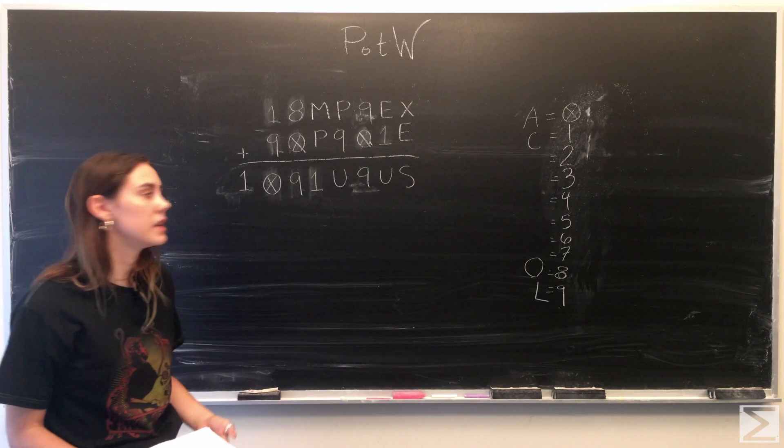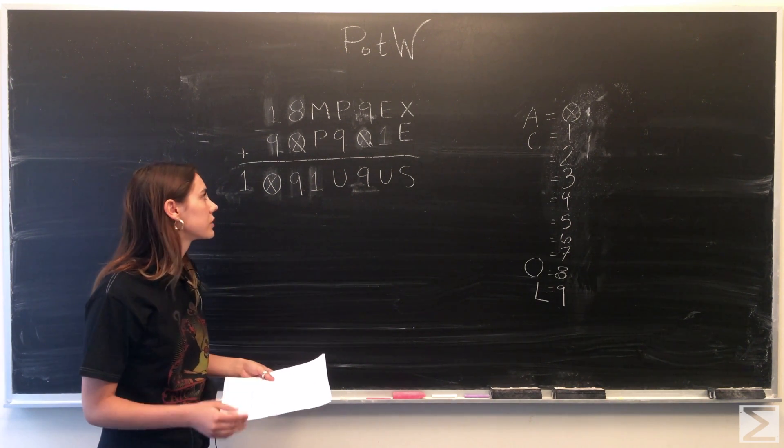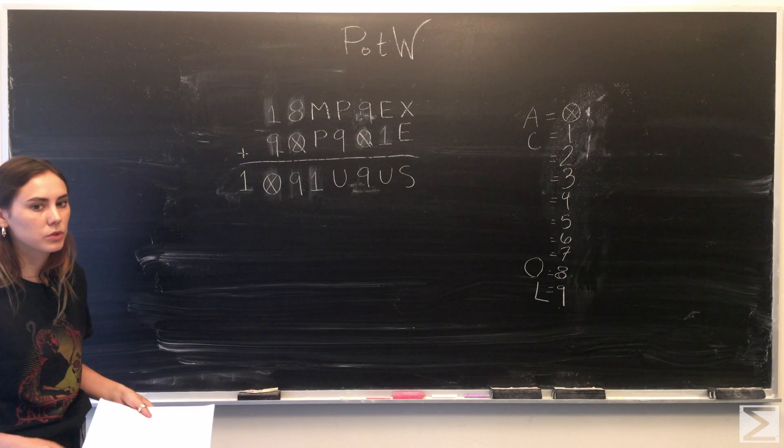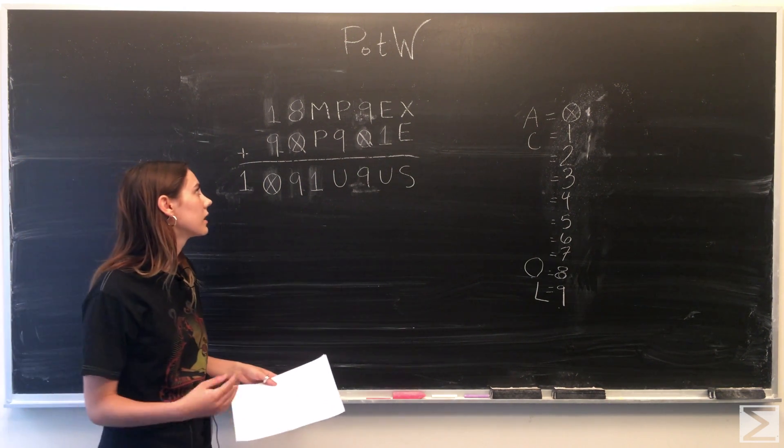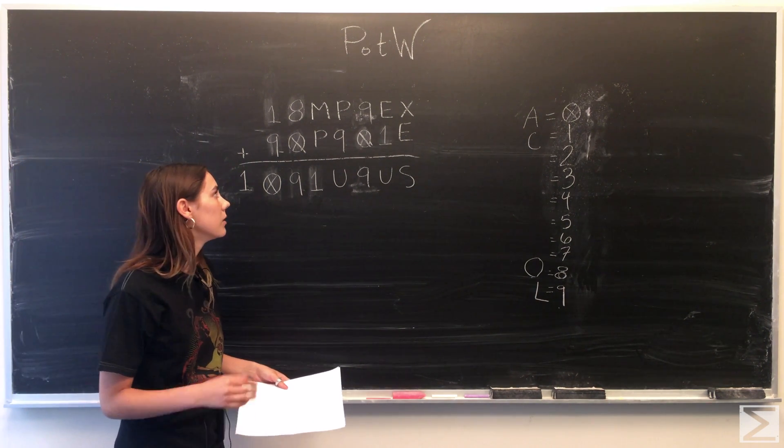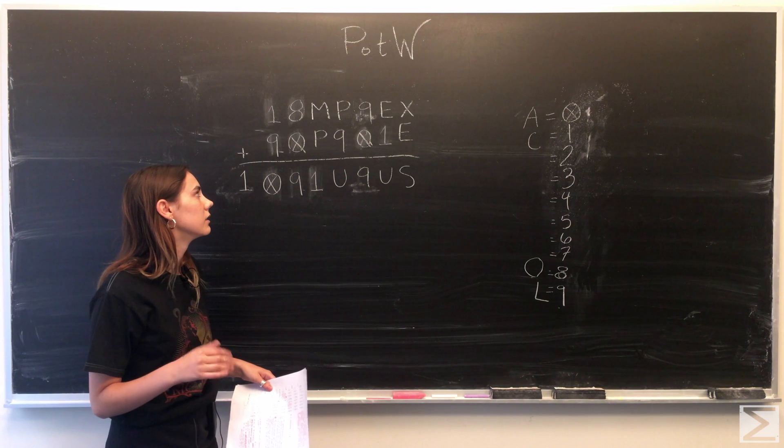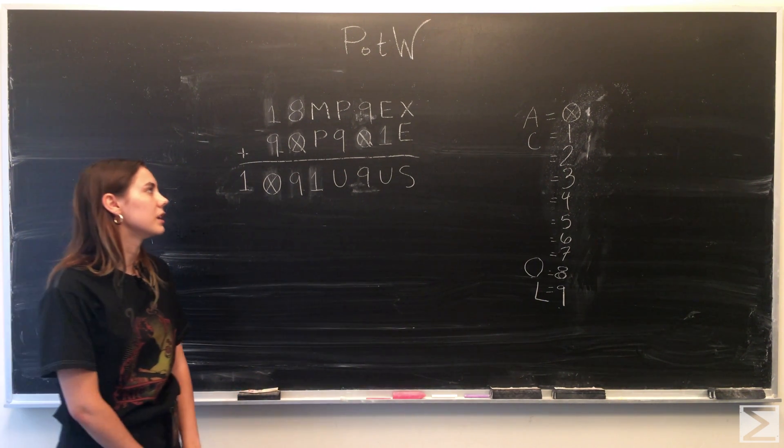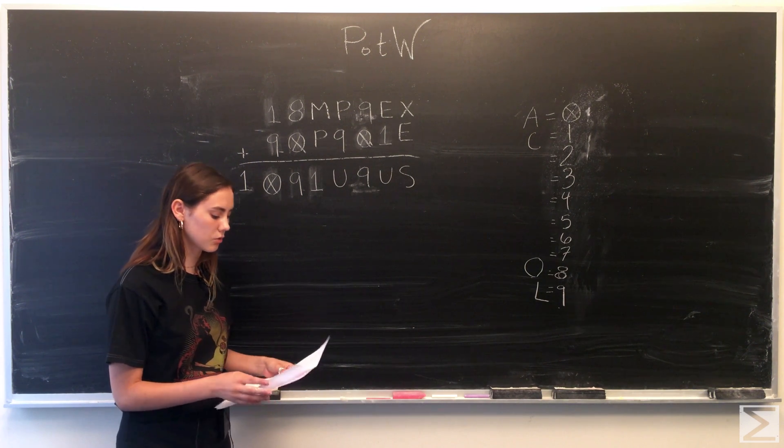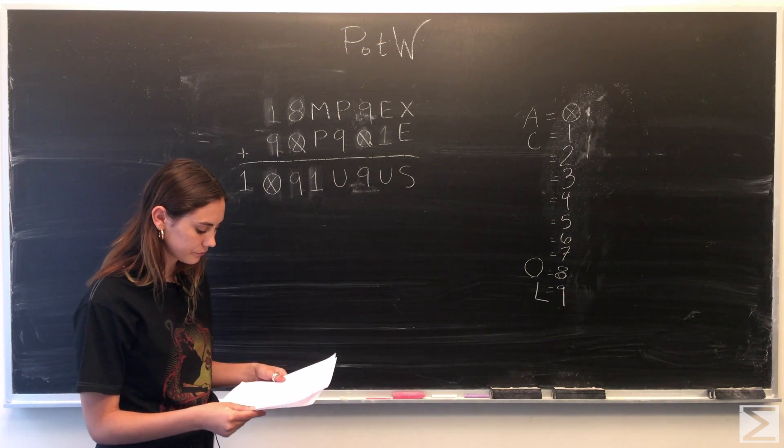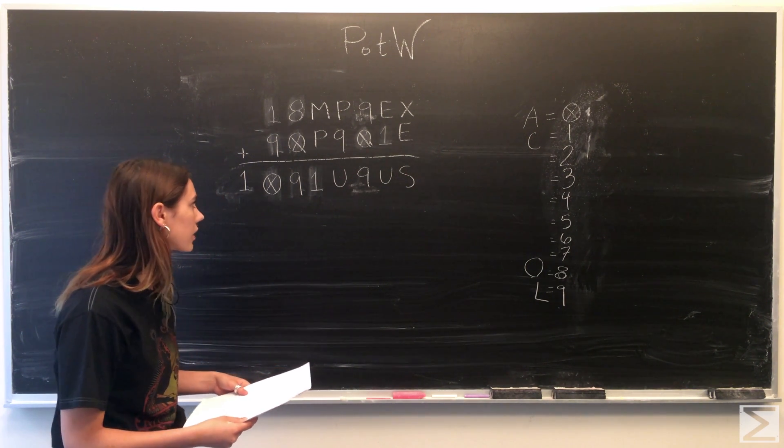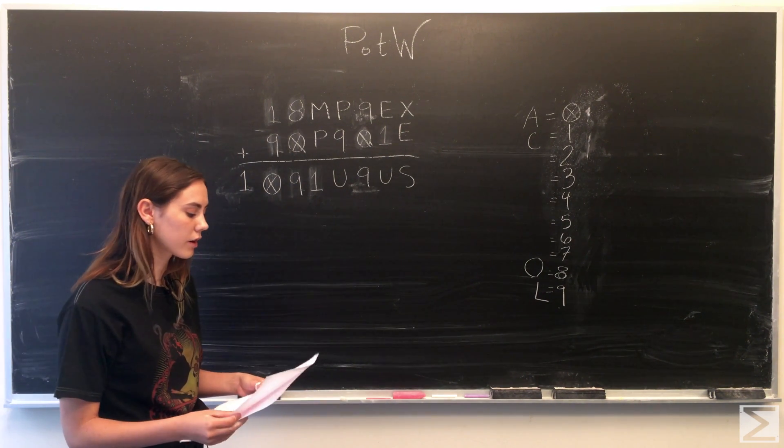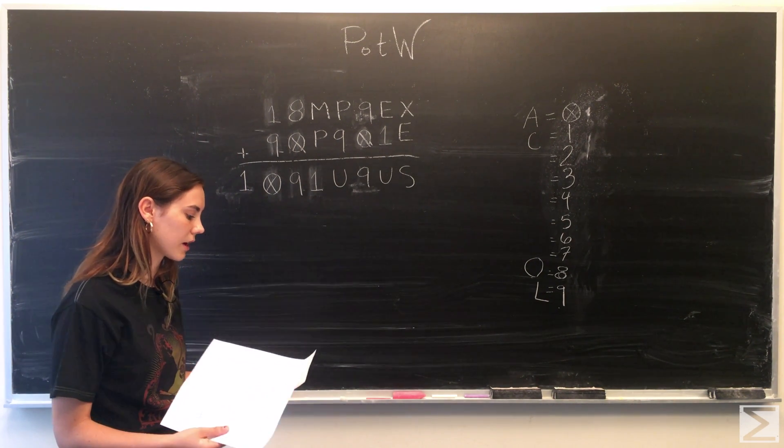Case 1 would be M equals 3, P equals 7. Case 2, M equals 7, P equals 3. Case 3, M equals 4, P equals 6. And case 4, M equals 6, P equals 4. We're just going to go through each of those cases right now and cross off the ones that don't work, and see if we can get to the final solution.